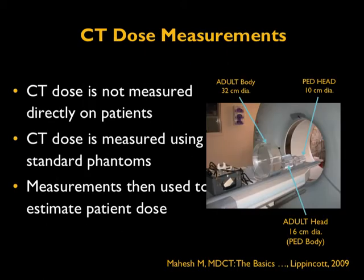Regarding CT dose measurements: in reality, CT dose is not measured directly on patients. Physicists use standardized phantoms — a 32 centimeter diameter lucite phantom assigned as an adult body and a 16 centimeter diameter phantom assigned as an adult head. Physicists use these phantoms to measure the output of the scanner, from which radiation dose measurements linked to the patient can be derived.